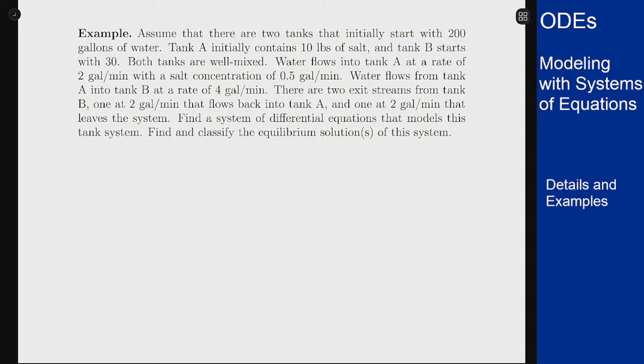I have two tanks to start with 200 gallons of water. Tank A contains 10 pounds of salt, tank B starts with 30. Both tanks are well mixed. Water flows into tank A at a rate of 2 gallons per minute, salt concentration 0.5. Water flows from A into B at 4 gallons per minute, and there's two exit streams from B: one at 2 gallons per minute that goes back to A, one at 2 gallons per minute leaves the system.